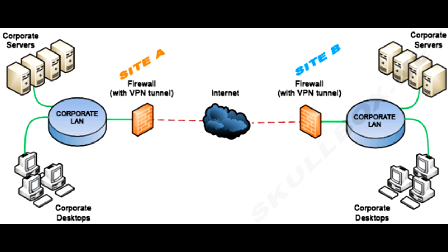The second type is site-to-site VPN. A site-to-site VPN is also called a router-to-router VPN and is mostly used in corporates. Companies with offices in different geographical locations use site-to-site VPN to connect the network of one office location to the network at another office location. When multiple offices of the same company are connected using site-to-site VPN, it is called intranet-based VPN.